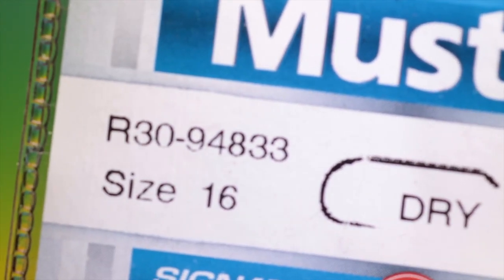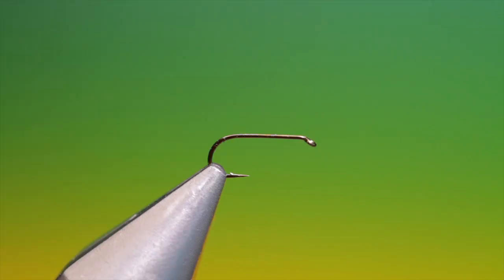We'll start with the Mustard R30, size 16. This should be tied on an 18 to a 22, but we'll give it a go.